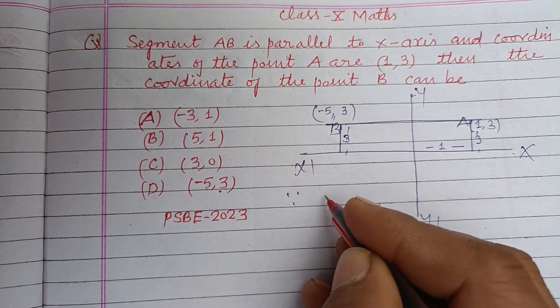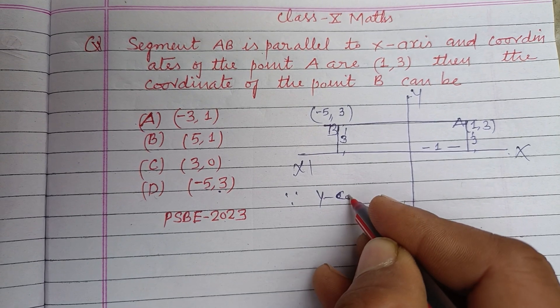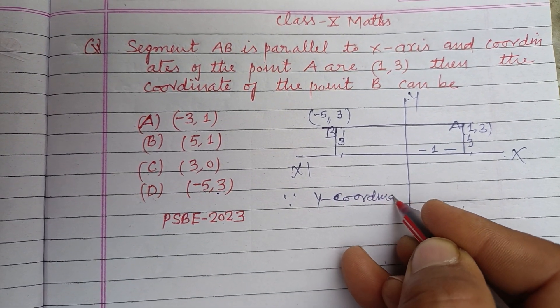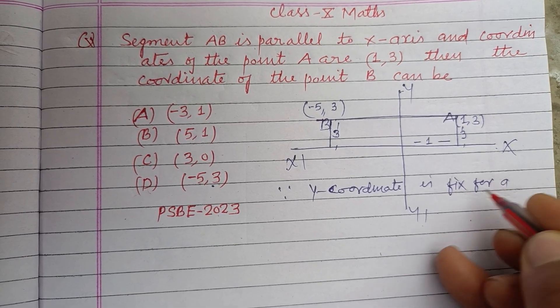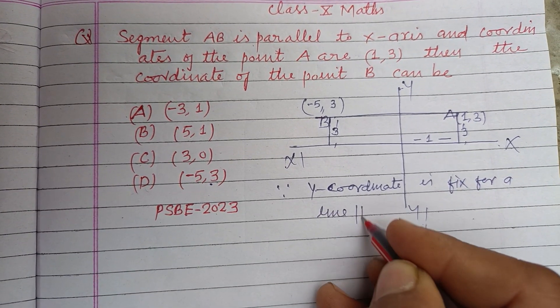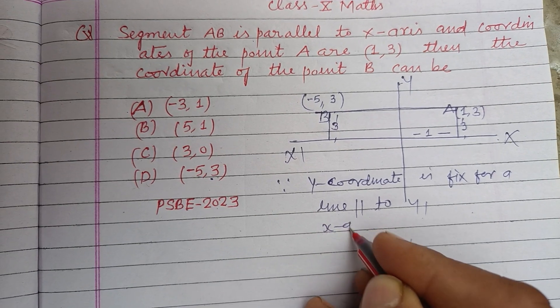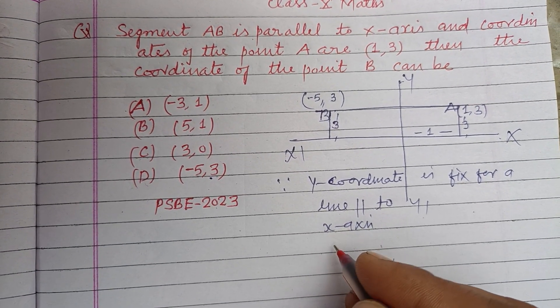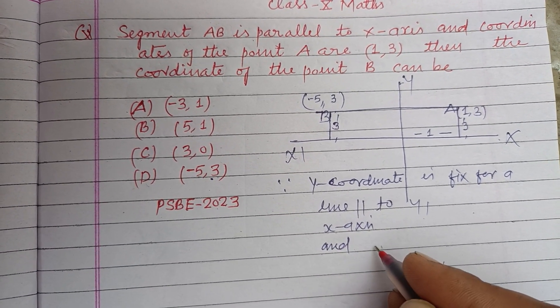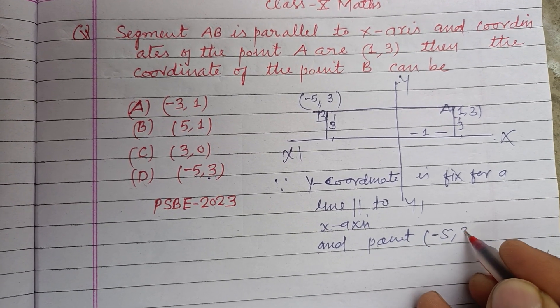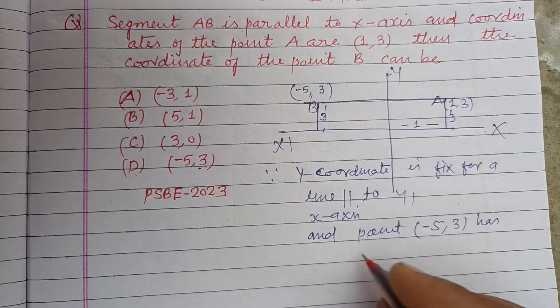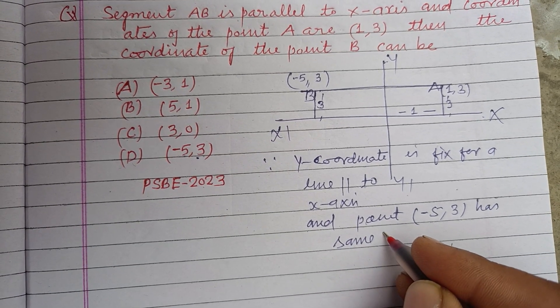Since y-coordinate is fixed for a line parallel to x-axis, and point (-5, 3) has the same y-coordinate.